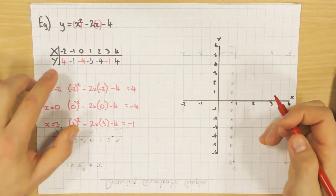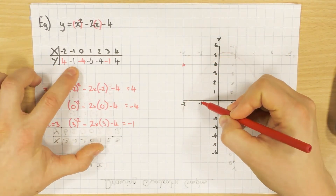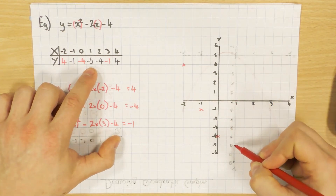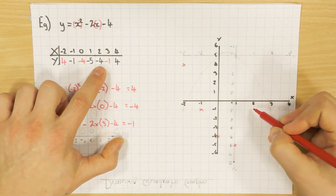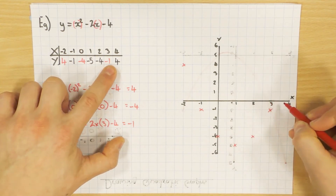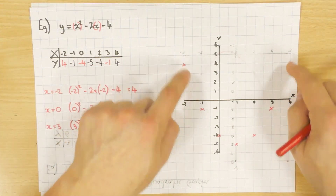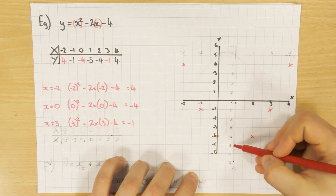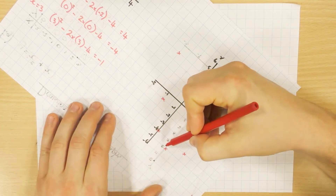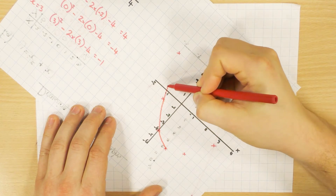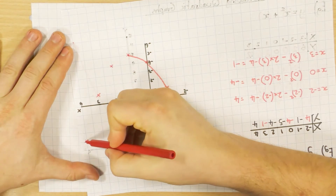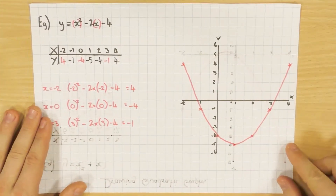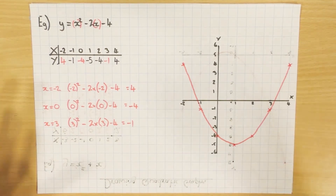Once you've done that, you can plot your points: minus 2, 4; minus 1, minus 1; 0, minus 4; 1, minus 5; 2, minus 4; 3, minus 1; and 4, 4. You can see I've got 4 and 4, minus 1 and minus 1, minus 4 and minus 4 — in the middle I have 1, minus 5. So that is definitely going to be the lowest point. Turn your paper because that is the lowest point, and turn to try to make your hand flow in the direction you want. Just by doing that you tend to get a nice curve. Use pencil in the exam just in case you make a mistake.